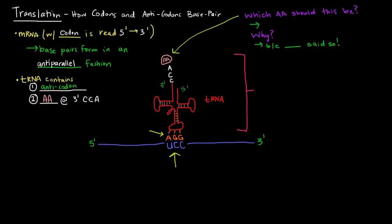In this diagram here we have an mRNA molecule and it contains the codon. Notice the mRNA is running 5' to 3' to the right. The tRNA is running 5' to 3' to the left. So they are antiparallel.